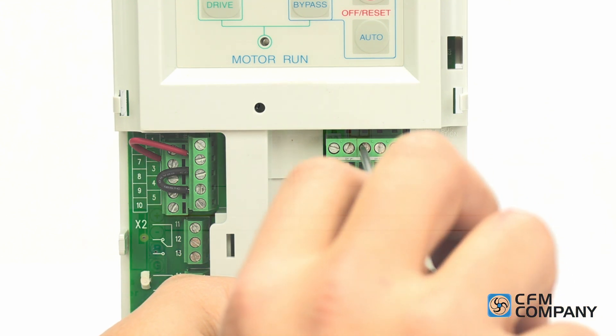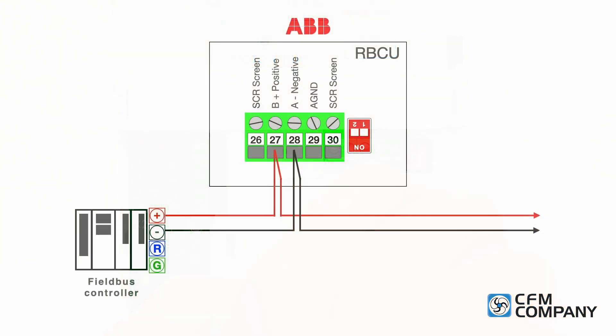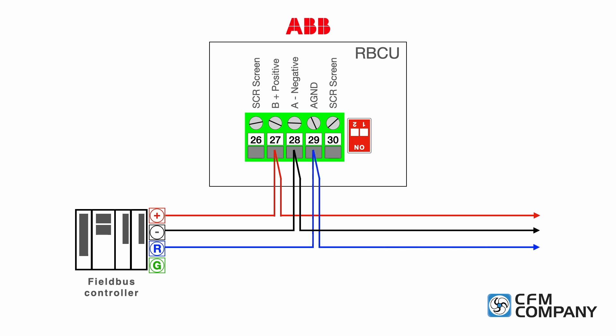Connect the negative network wire to terminal 28. In our example, this is the black wire. For three wire communication networks, connect the optional reference wire to terminal 29. Note that the network wire shield is not landed to the bypass control unit.